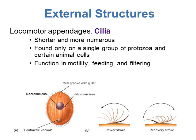Another external structure is the cilia. These are kind of like the fimbriae of the prokaryotic cell — shorter and more numerous, looking like little hair-like structures that can cover the entire cell. They're found in a group of single protozoans and some animal cells. They function in motility, helping the organism move, and can also help with feeding and filtering food out of water. They go back and forth in a power stroke and recovery, propelling the cell forward or moving water past the cell to capture food.